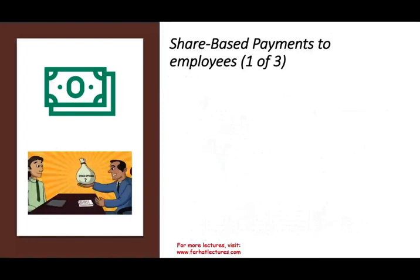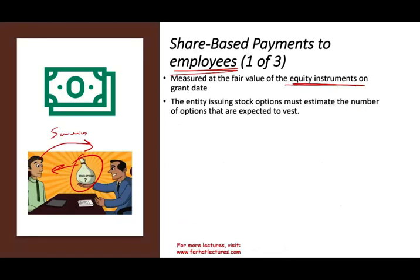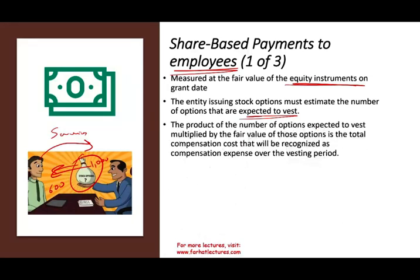Now we're going to look at share-based payment to employees, which is treated a little differently. It's measured at the fair value of the equity instrument on the grant date. Notice: we are giving stock options to our employees, and what is the employee giving back? Services — they're working for the company. When we measure the transaction we use the equity instrument, just like US GAAP does. The entity issuing stock options must estimate the number of options expected to vest — we might give them 1,000 options but not all vest; maybe 600 actually vest because some employees leave.